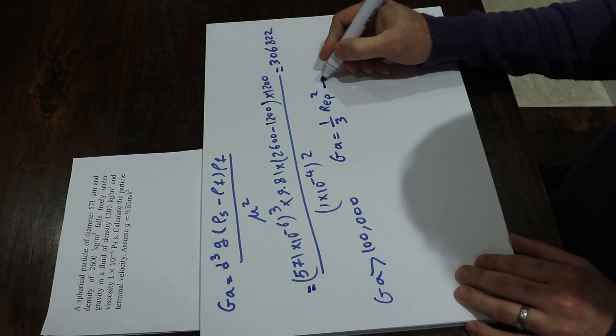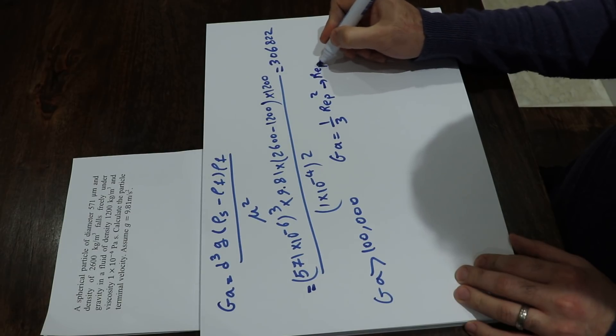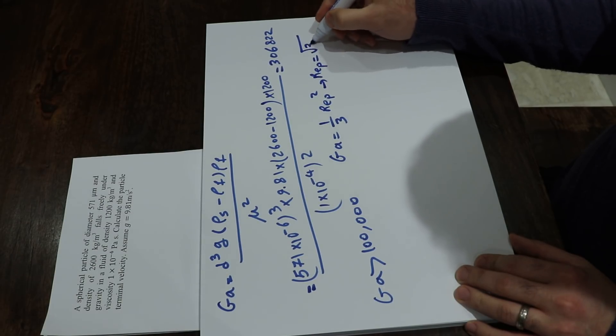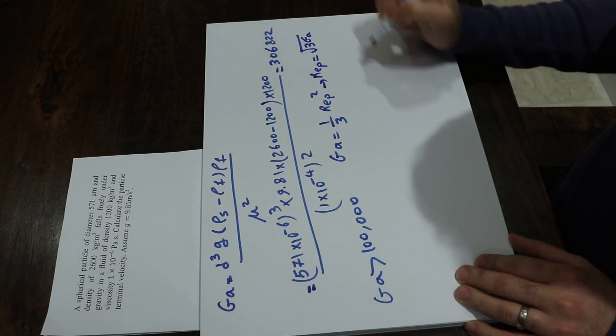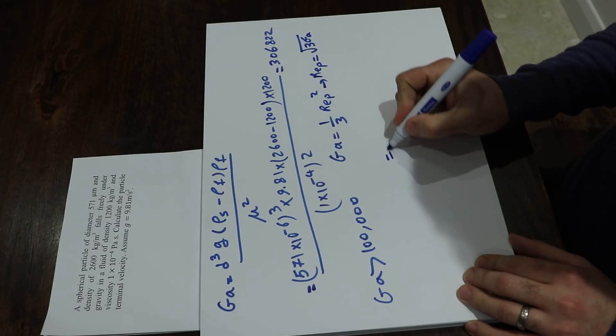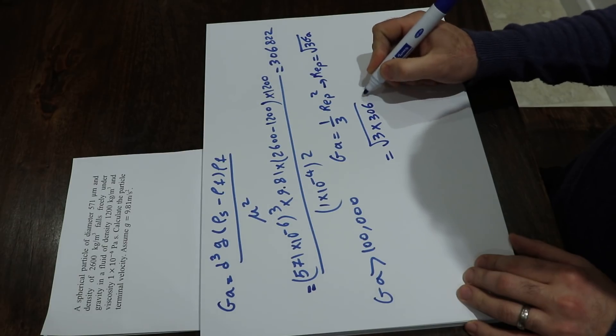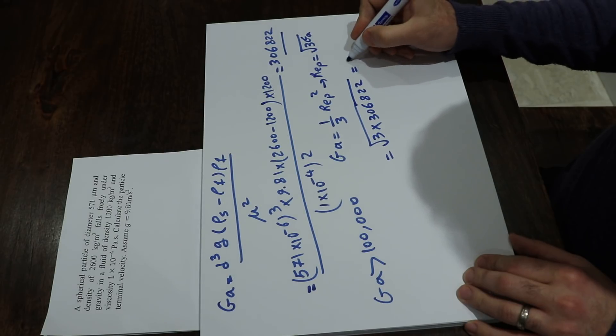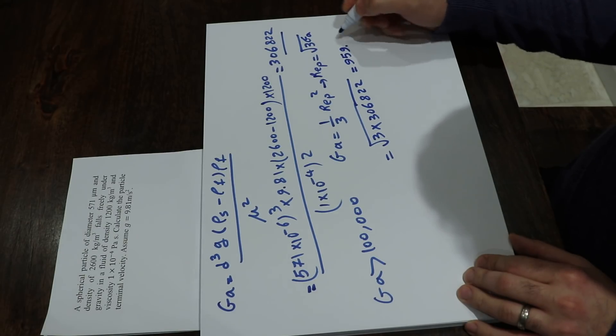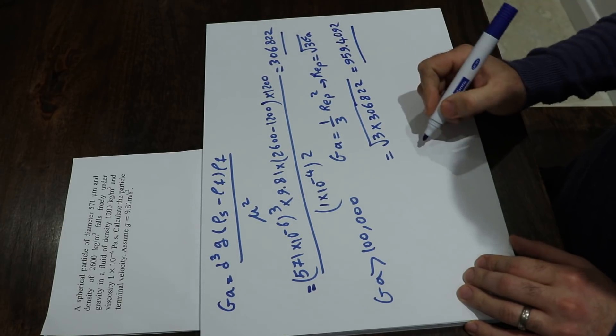Therefore Reynolds number will be equal to square root of 3 times the Galileo number, which will be equal to square root of 3 times 306822. That is the Galileo number which will be equal to 959.4092. And that is your Reynolds number.